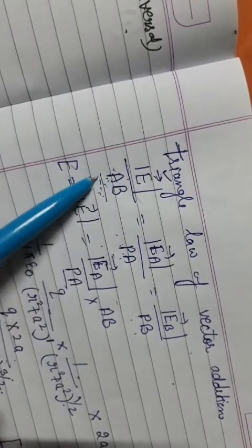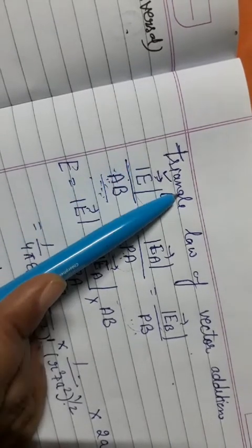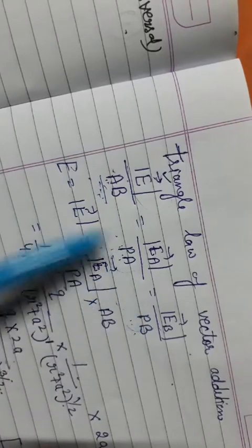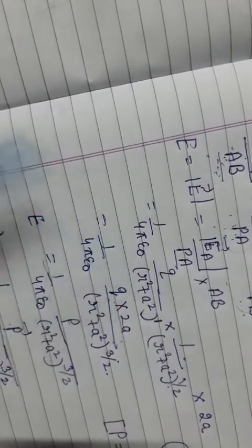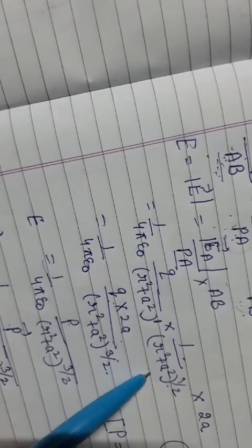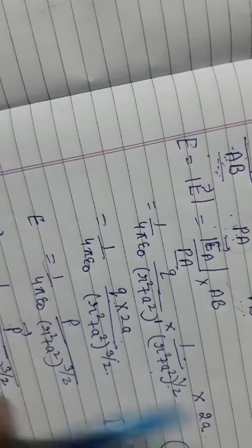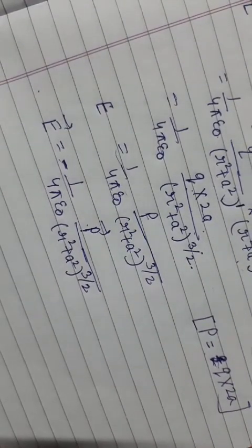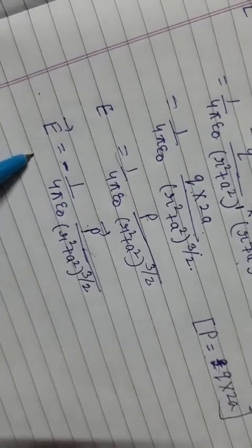The electric field E is represented by side AB, EA by side PA, and EB by side PB. To find the value of the electric field, we take equations 1 and 2. E equals EA over PA times AB. The value of EA is already known, PA from Pythagoras' theorem is the square root of R squared plus A squared, and AB — the distance between the two poles of the dipole — is Q times 2A, equal to the dipole moment P. This is the value of the electric field due to the equatorial or transversal line.